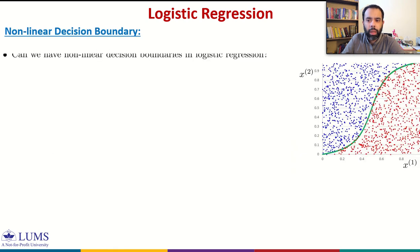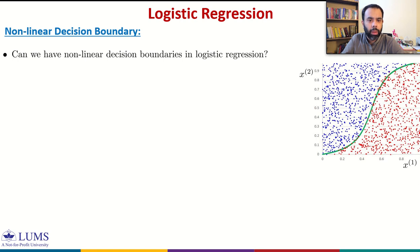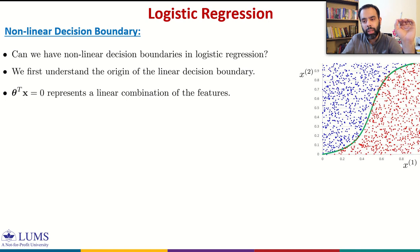The question is: can we have non-linear decision boundaries in logistic regression? In practice we may have two classes that can be very well separated using a non-linear boundary. To answer this, we first need to understand the origin of the linear decision boundary. We have theta transpose X equal to 0 defining the decision boundary, and since it's a linear combination of the features, that's why we get a linear boundary.